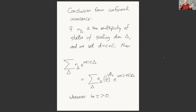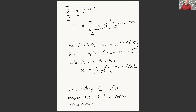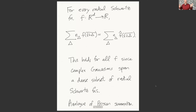This is a beautiful formula—practically Poisson summation. The key realization of Hartman, Mazach, and Rastelli: consider a complex Gaussian on ℝ^d mapping x to e^{2πiτ|x|²/2}. The Fourier transform of this Gaussian on ℝ^d equals the same thing with τ replaced by −1/τ and an (i/τ)^{d/2} factor. Setting the scaling dimension equal to |x|²/2, this looks just like Poisson summation, suggesting the conformal invariance formula is a Poisson summation identity.